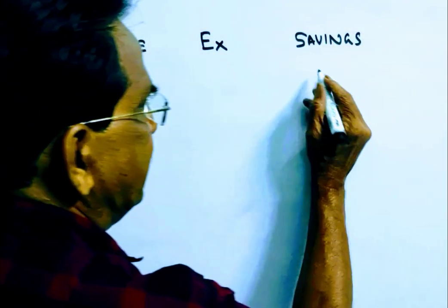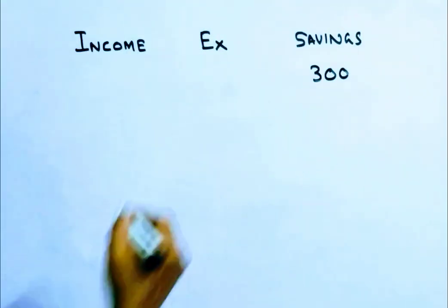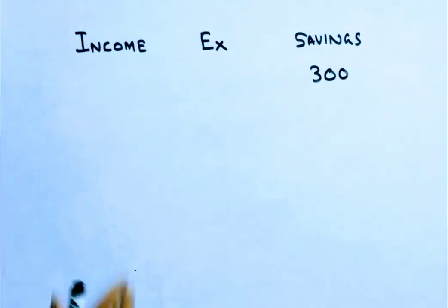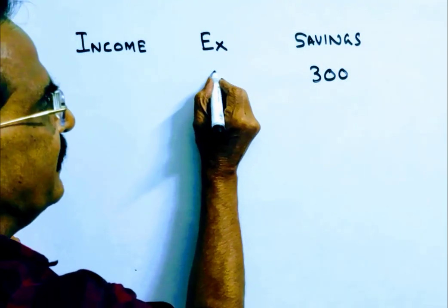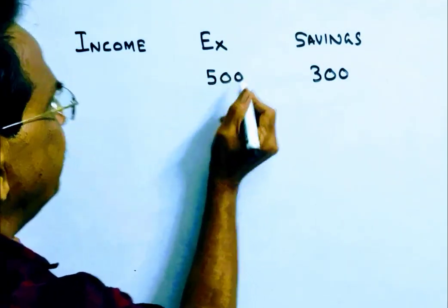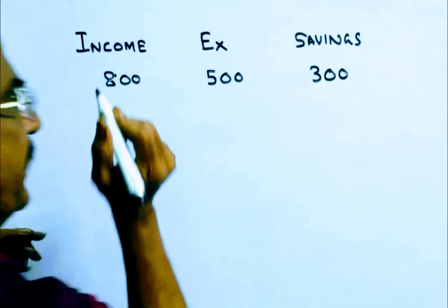Friends, say his monthly savings are 300. 2/3 of 300 means 200. So expenses are 200 more than 300. That is, expenses are 500. And income is 300 plus 500, which is 800.